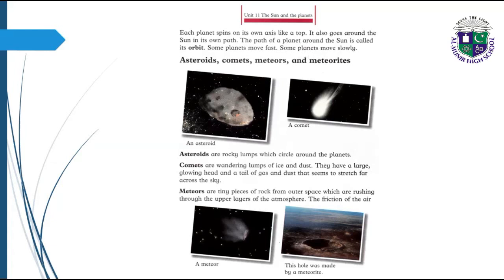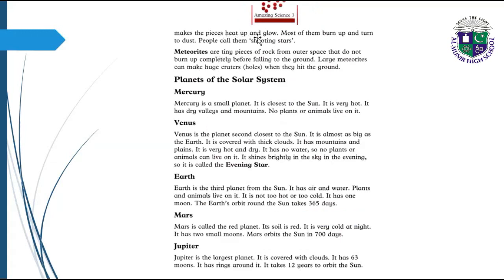Asteroids, comets, meteors, and meteorites: Here we have the pictures of asteroid and comet. Asteroids are rocky lumps which circle around the planets. Comets are wandering lumps of ice and dust. They have a large glowing head and a tail of gas and dust that seems to stretch far across the sky. Meteors are tiny pieces of rock from outer space which are rushing through the upper layers of the atmosphere. The friction of the air makes the pieces heat up and glow. Most of them burn up and turn to dust. People call them shooting stars. Meteorites are tiny pieces of rock from outer space that do not burn up completely before falling to the ground. Large meteorites can make huge craters when they hit the ground.